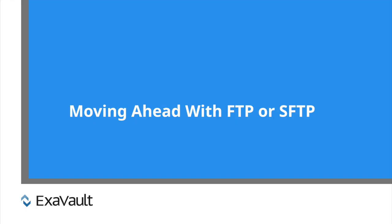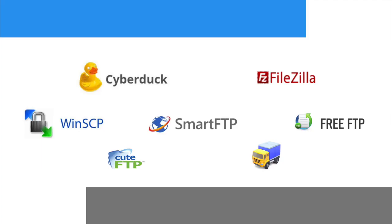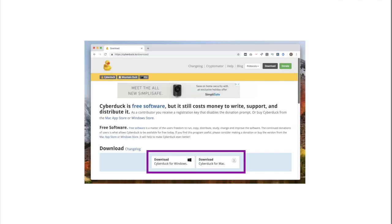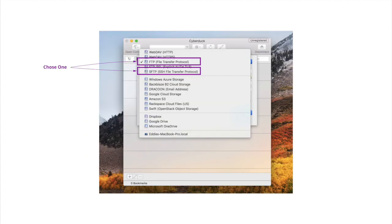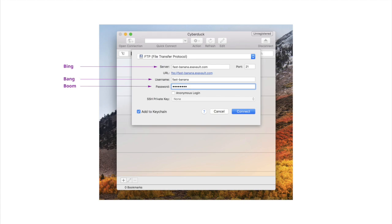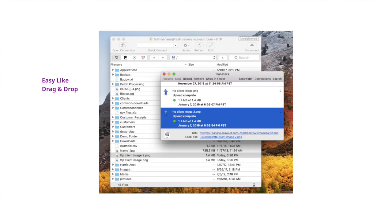Consider your needs and choose FTP or SFTP. Then the process to get going is simple. First, select the FTP client you want to use — many clients support both FTP and SFTP. Then download and install the client software. Select the appropriate protocol you want to use, enter the server address, username, and password, then connect to the FTP server and transfer files.